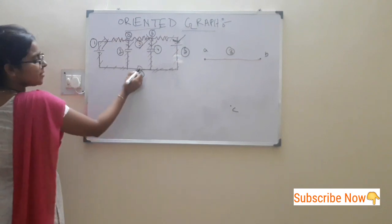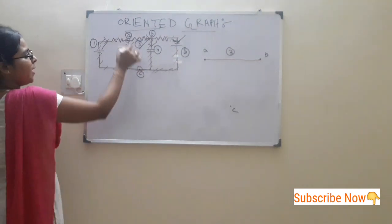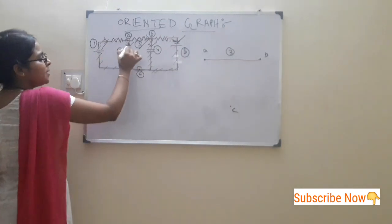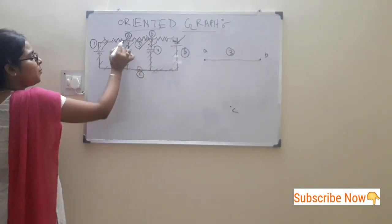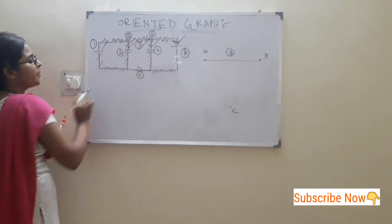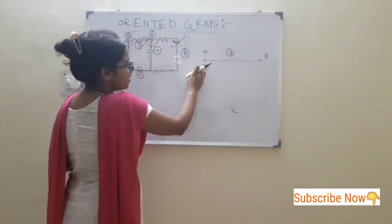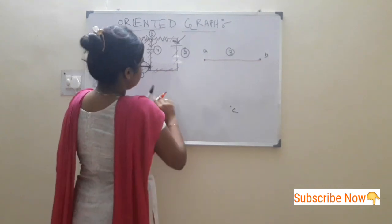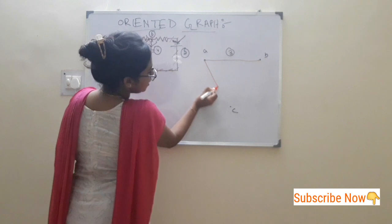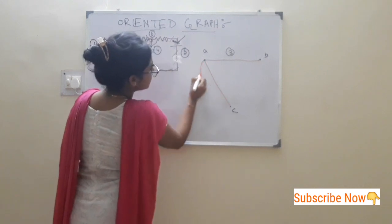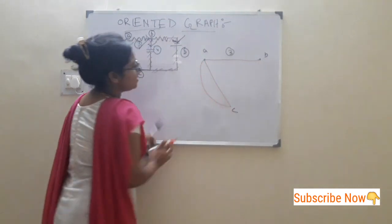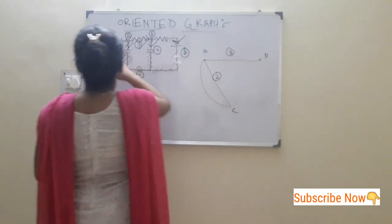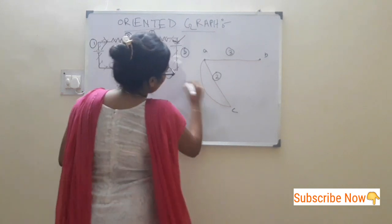Here is node A and here is node C. Between node A and node C, there are two branches: one is branch 2, another one is branch 1. So we have to draw two branches between node A and node C — one is branch 2, another one is branch 1.